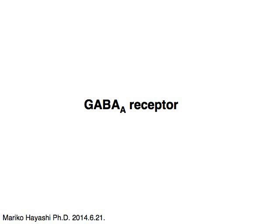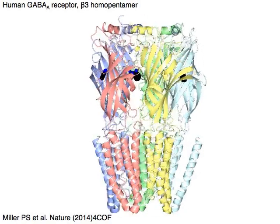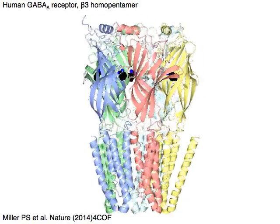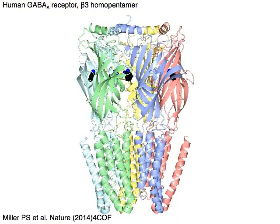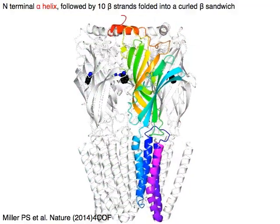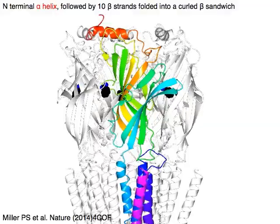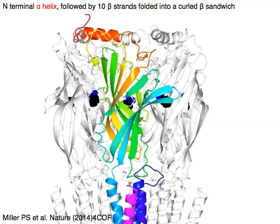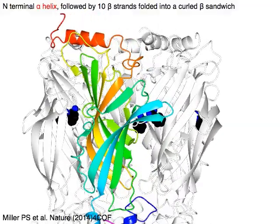GABA-A receptor. The human GABA-A receptor has a beta-3 homopentamer with a terminal alpha helix in red, followed by 10 beta strands folded into a curl beta sandwich.